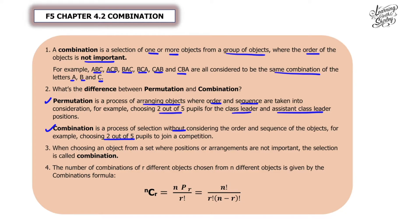When choosing an object from a set where positions or arrangements are not important, the selection is called combination. The number of combinations of r different objects chosen from n different objects is given by the formula: nCr equals n factorial over r factorial times (n minus r) factorial. Remember to memorize this formula for combination.